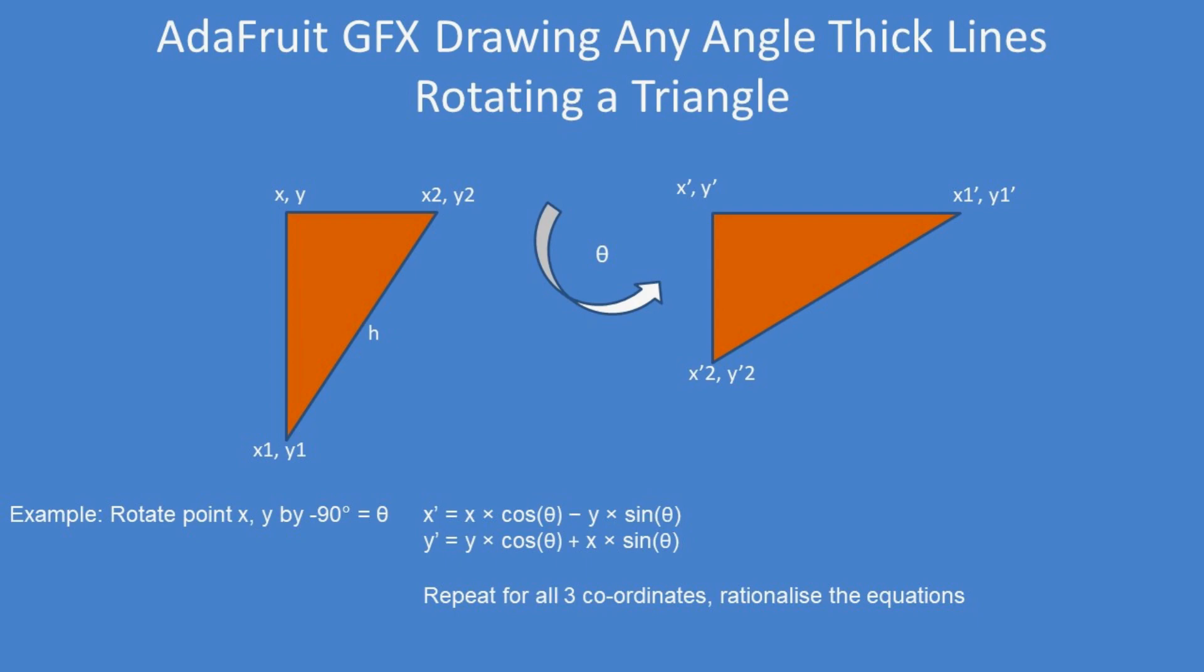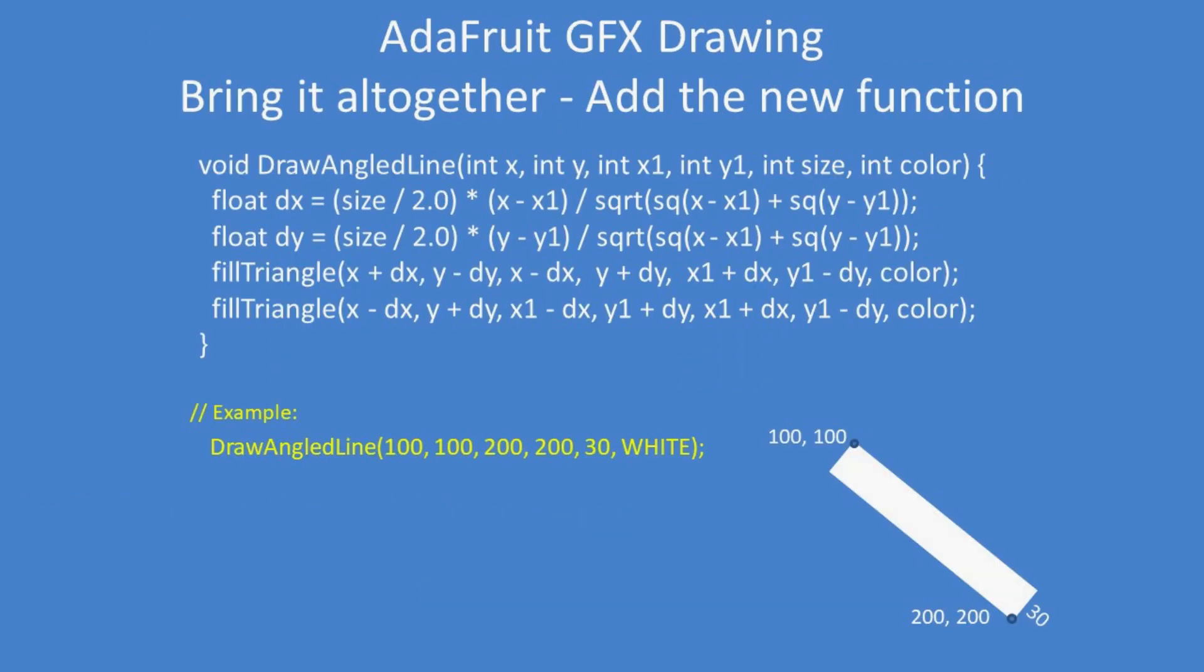Bring it all together, rationalize the equations, and there is the function. So just include that function in your program and now you can draw angled lines from any point to any point of any thickness.